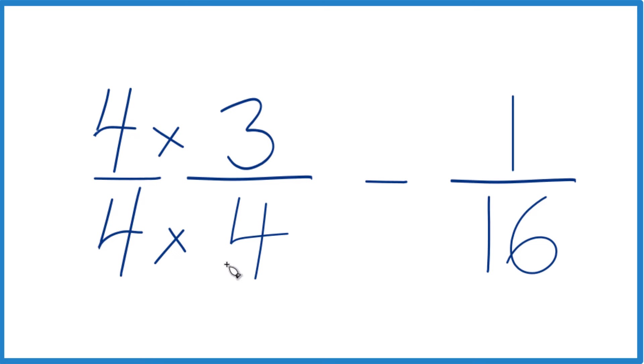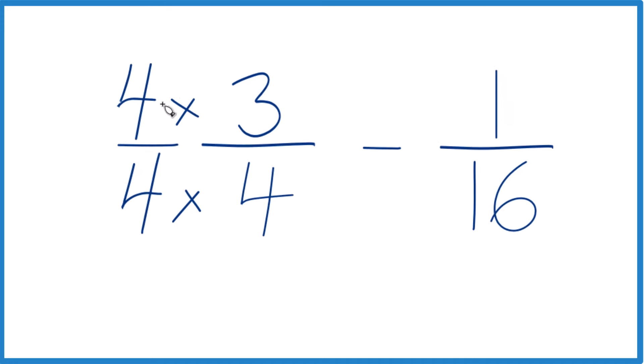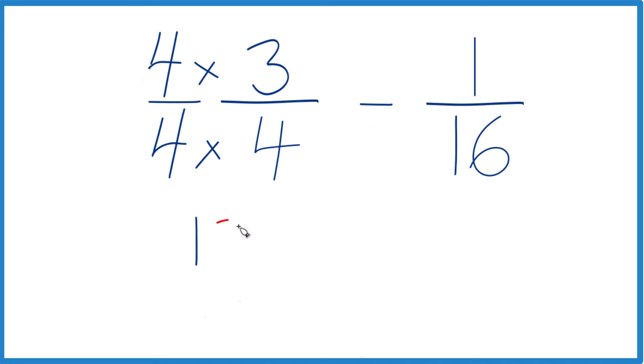So one times three-fourths is still three-fourths. We haven't changed the value. But now what we have is four times three is twelve, and then four times four is sixteen. And twelve-sixteenths, that's equivalent to three-fourths, but we can subtract one-sixteenth much easier.